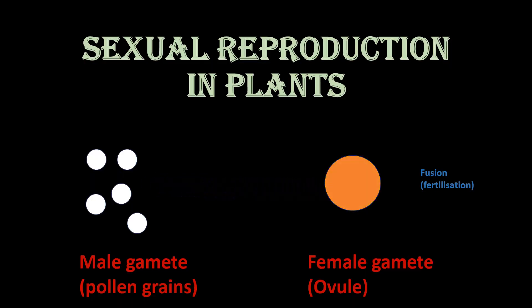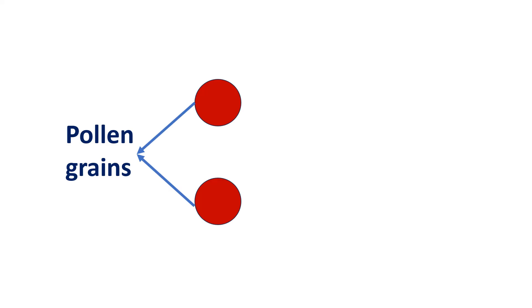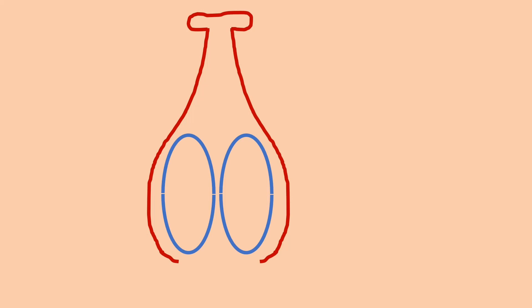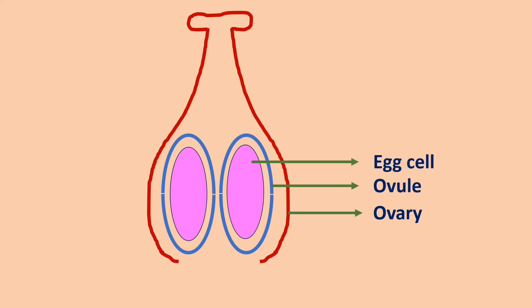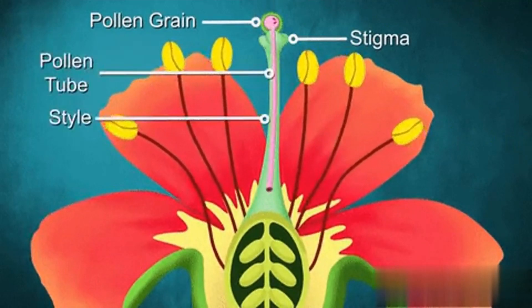Sexual reproduction in plants involves the fusion of male and female gametes to produce offspring with genetic variation. Male gametes — pollen grains — are produced in the anthers of the flower's stamens. Each pollen grain contains two sperm cells. Female gametes, egg cells, are produced within the ovules located in the ovary of the flower's carpel.